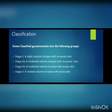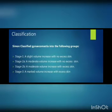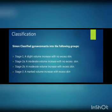Classification: Simon classified gynecomastia into the following groups. Stage 1 is a slight volume increase with no excess skin — there is a volume increase in the breast but no excessive skin increase. Stage 2a is a moderate volume increase with no excess skin, meaning volume increases more than Stage 1 but still with no excessive skin.